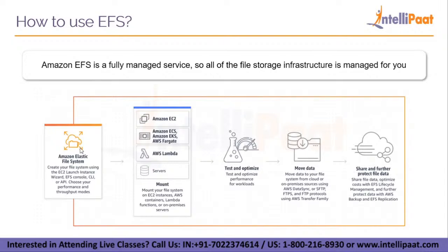You can also create your file system using the EFS console, the command line interface, or APIs using a programming language of your choice. In this stage, you can also choose your performance and throughput modes. These modes determine how much performance and how much throughput — that is, the input/output operations per second (IOPS) — you need.